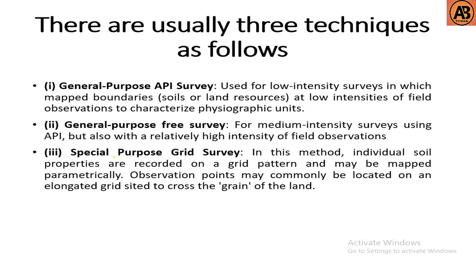There are usually three techniques of soil survey: general purpose API survey, general purpose free survey, and special purpose grid survey. API survey is used for low-intensity surveys, in which map boundaries are drawn at low intensities of field observation to characterize physiographic units.